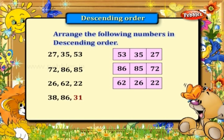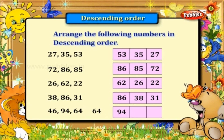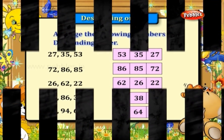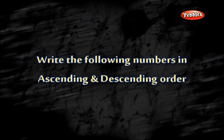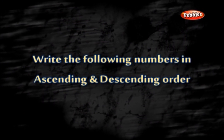The order is 62, 26, and 22. Next: 38, 31. Next: 46, 94, 64. The descending order is 94, 64, and 46.